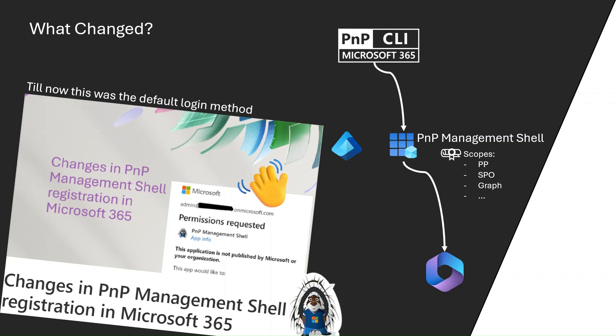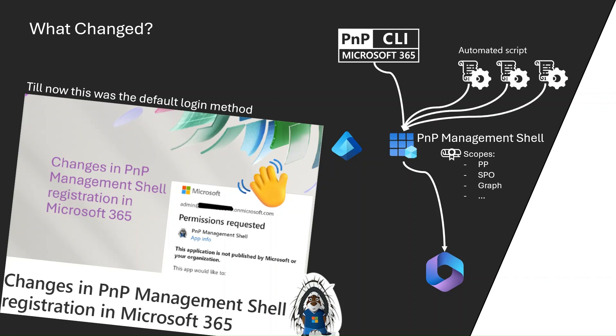So it got you unblocked quickly. And although it was really convenient and fast to log in — you didn't require any additional effort or work to create this app registration yourself, you just got it with the product — we noticed it was a bit overused. It was the best way to use CLI in your dev and QA environments, but maybe not the best approach for a production environment, and for sure not the best way to use it as your login app registration for your automated scripts.